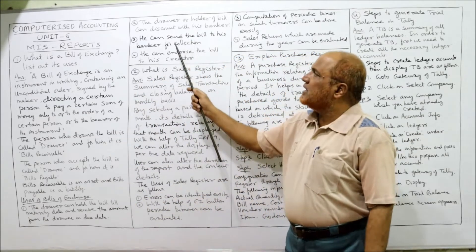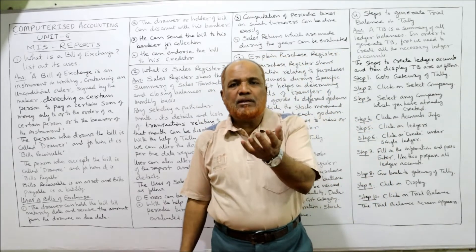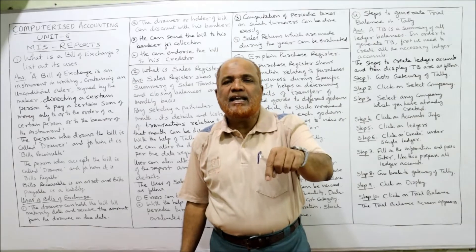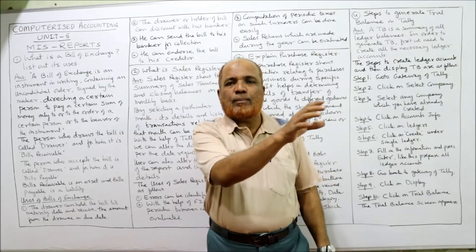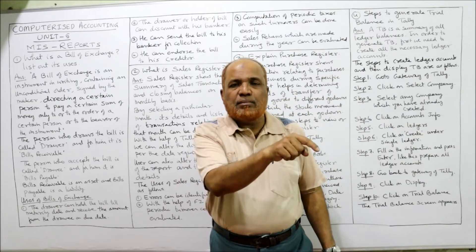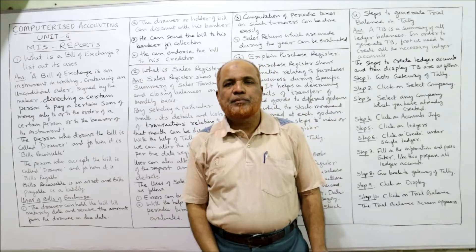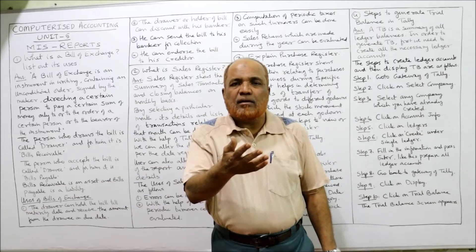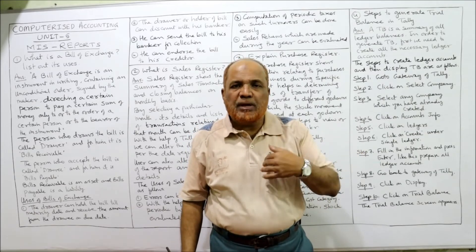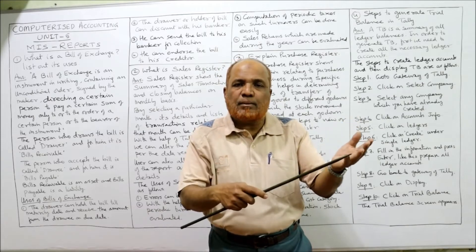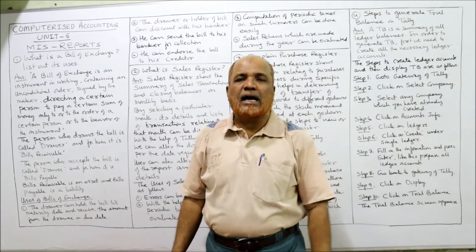Third use: the drawer can send the bill to his banker for collection. He is not keeping the bill himself; he sends it to the banker with instructions to collect the amount after three months and credit it to his bank account. The banker acts as an agent and collects the money on his behalf. This is called bill sent to bank for collection.